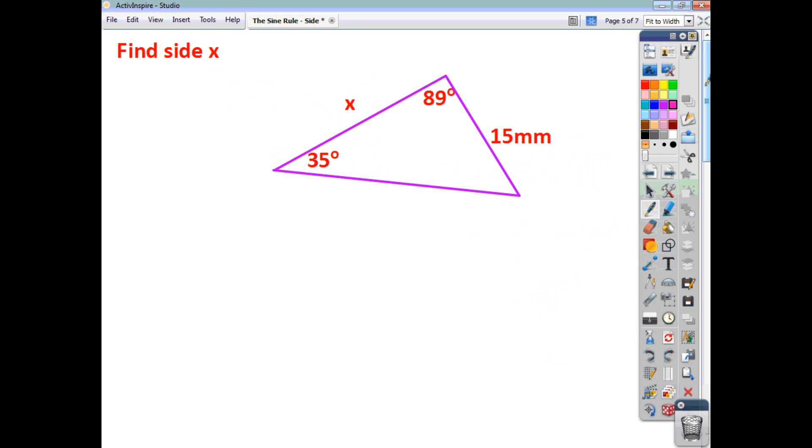Now, you can often come across questions like these. And you have one pair of opposites, and you might think, well, this isn't a sine rule question, because I don't have two pairs of opposites. But you can work out this third angle. So, remembering that all three angles add up to 180, we can work out that this angle must be 56 degrees. Now that we've done that, here we have a second pair of opposites.